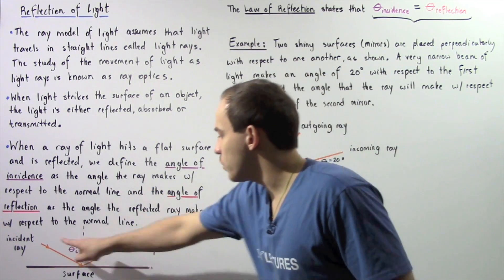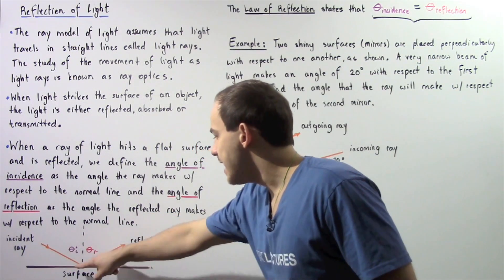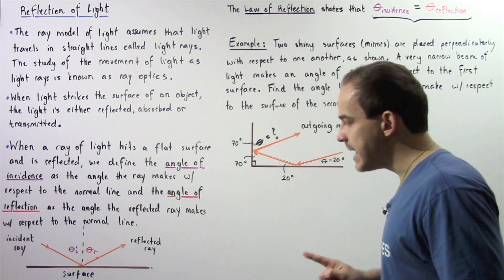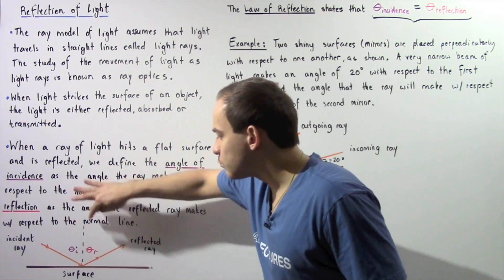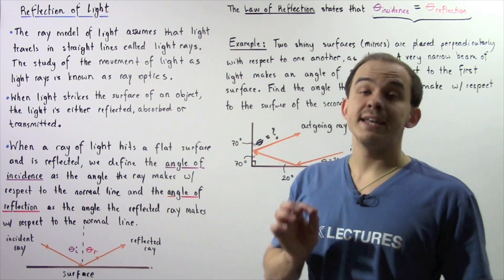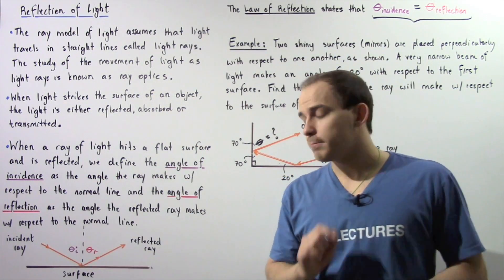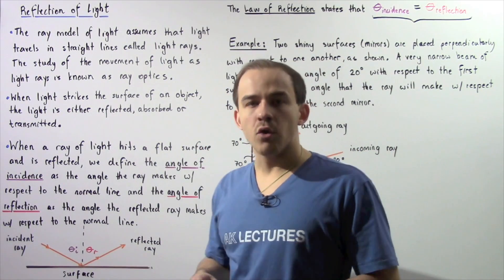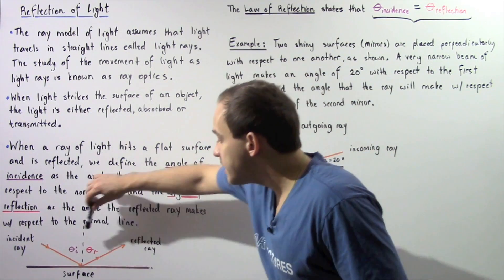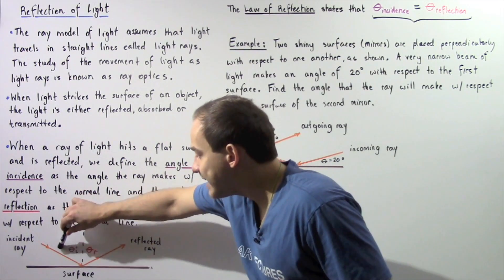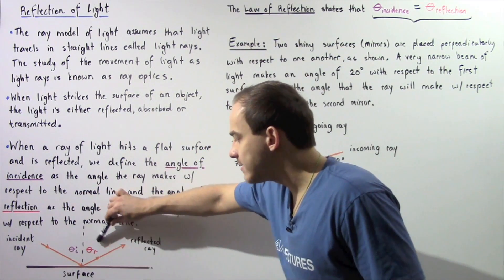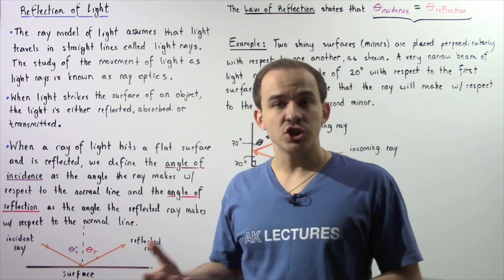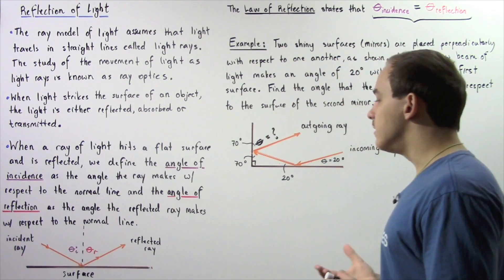We have the orange arrow coming in as the incident ray and the orange arrow going out as the reflected ray. This dashed line represents our normal line — the line that is perpendicular to the surface of our object. This angle is known as the angle of incidence, and this angle is known as the angle of reflection.